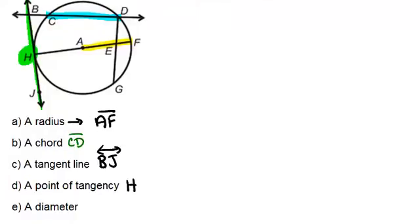And two more. A diameter. So a diameter is a segment that goes through the center of the circle and goes all the way through the circle as well. So that would be this line right here, HF. And that's the only diameter in this circle that has been drawn out.